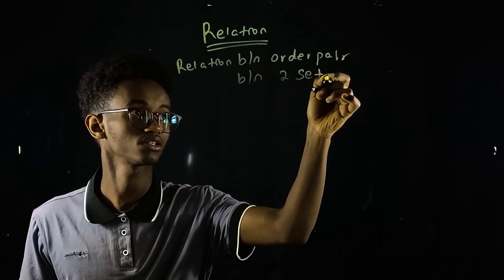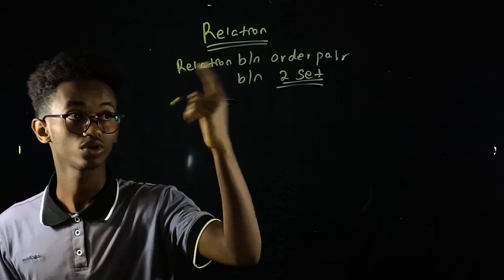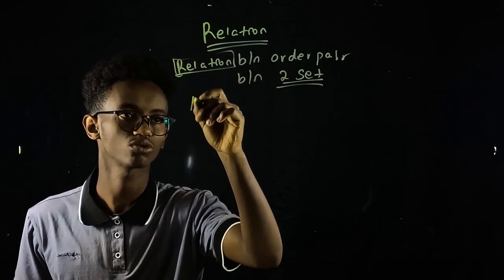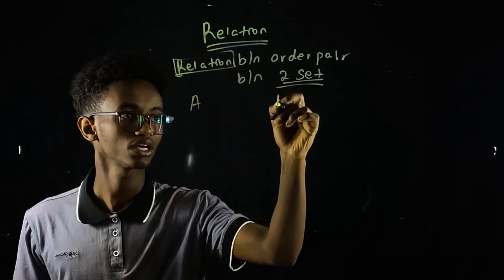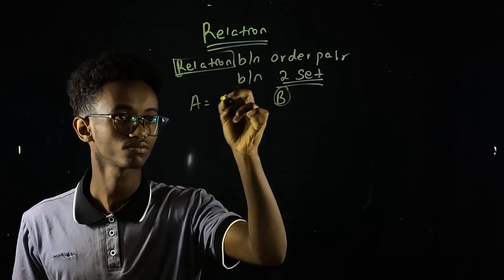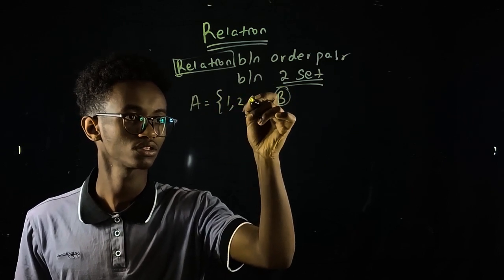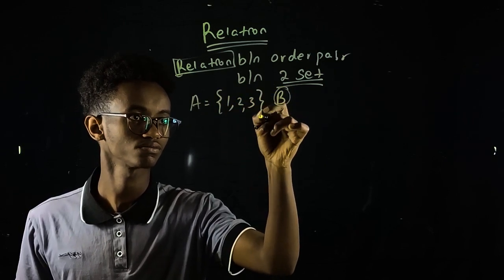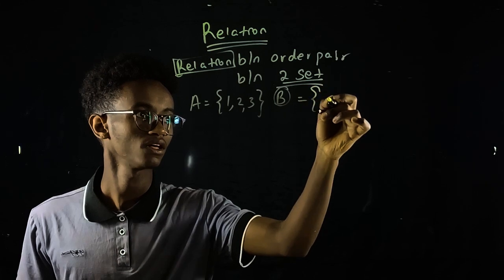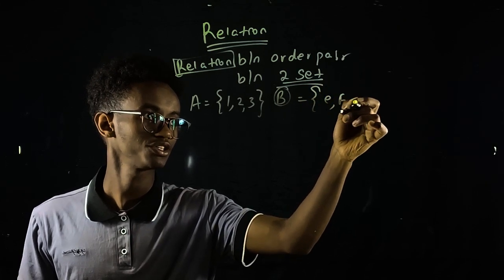We can say it like that. What does a function have? The function is related — we have a relation. This is the function of unit one, and the function is related.